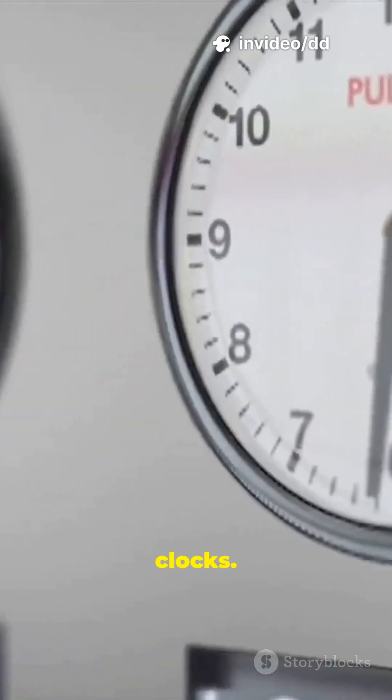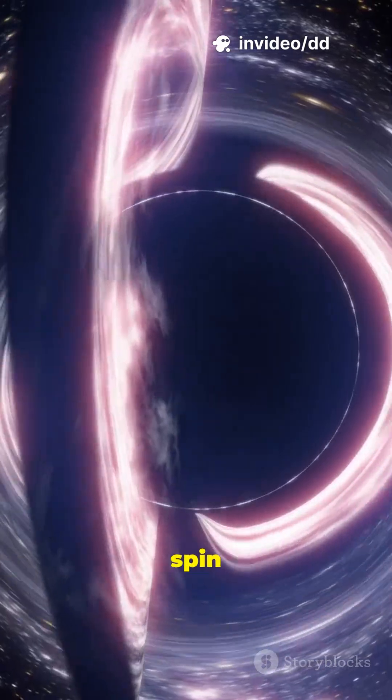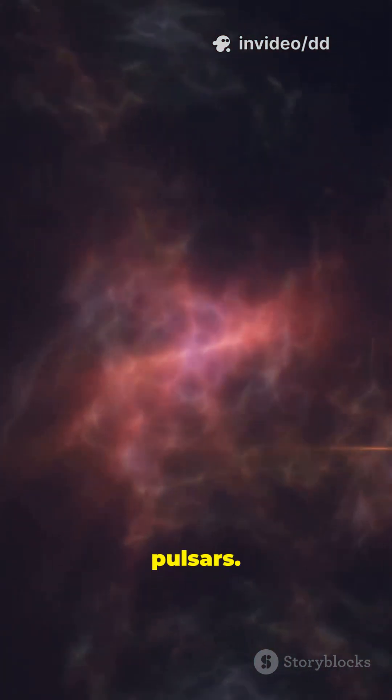Astronomers use those ticks as cosmic clocks. We time them to microseconds. Some steal matter from neighbors and spin up. That's why we call them millisecond pulsars.